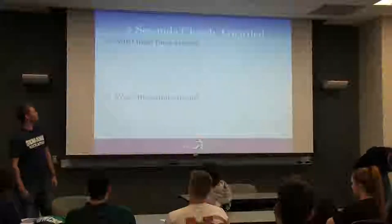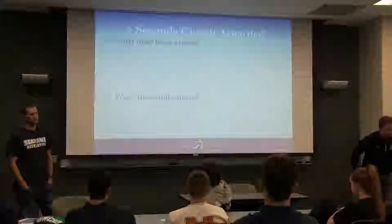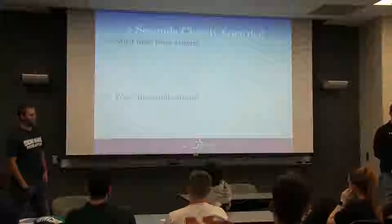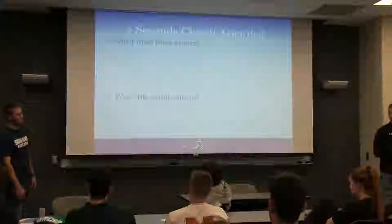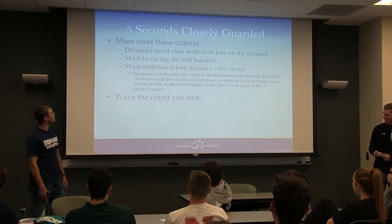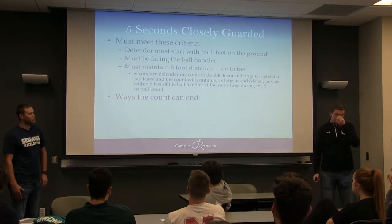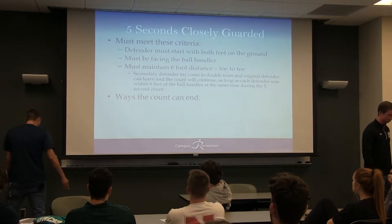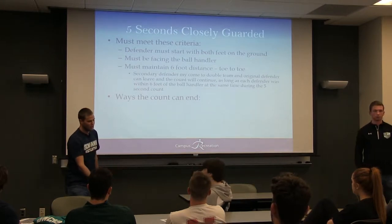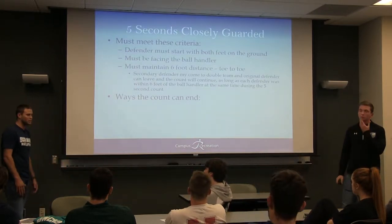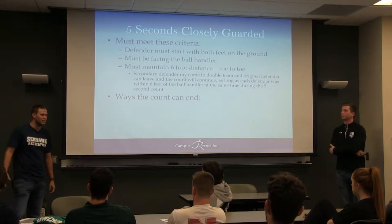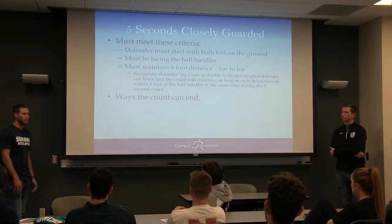Does anyone know the criteria for a five-second closely guarded call? Both feet on the ground, hand out within arm's length — that is pretty much it. You have to face the ball handler. If you are turned around while the player is dribbling, you are not guarding them, so it is not a five-second. But if you are dribbling the ball and I am within six feet with my hand out, and you are not moving — just dribbling — then you start the five-second count. We do this to prevent teams from holding the ball for 15 minutes and ending the game two to zero.